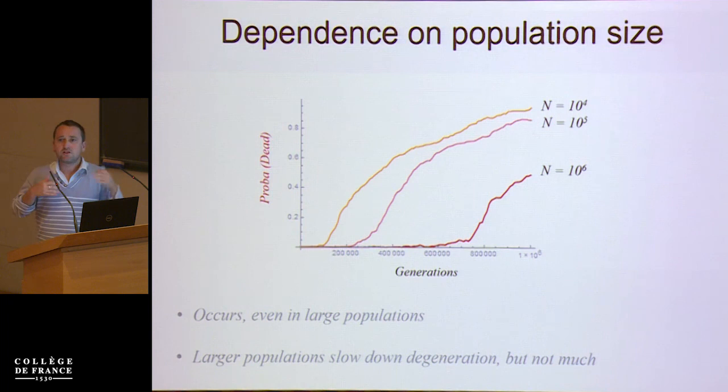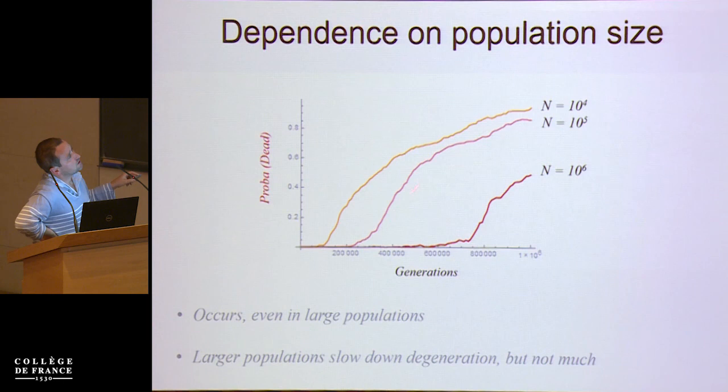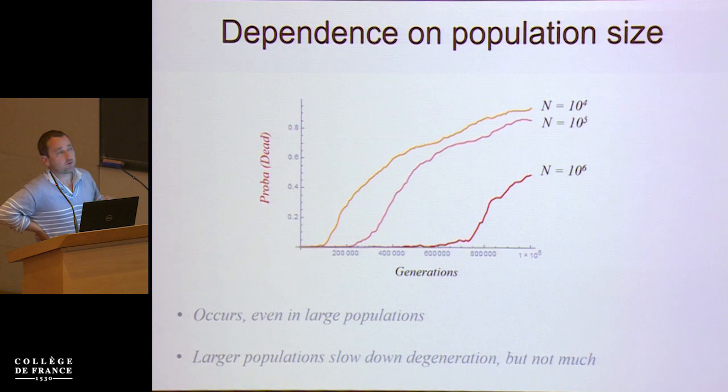We then asked what is the dependence of this process on population size, because it has been a very important issue for theories based on selective interference. When you increase population size, there is an effect — it slows down in larger populations. But when you change two orders of magnitude in population size, you don't get a two-order-of-magnitude increase in degeneration time.